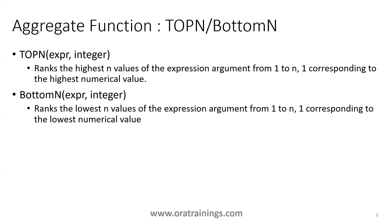For example, you want the top five ranks in a particular examination, or top five record counts for general ledger balances. TopN provides the list of records matching the top criteria. Similarly, BottomN starts from the least value up to the integer you mentioned — for example, BottomN(amount, 5) provides all records starting from the least up to the last five records, ordered by row number in ascending order.